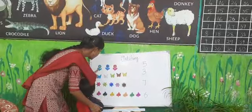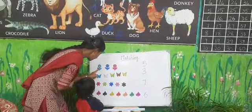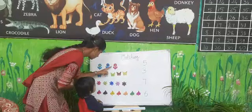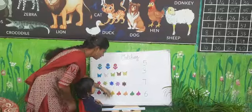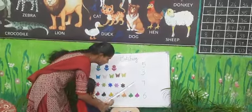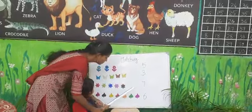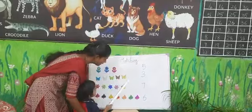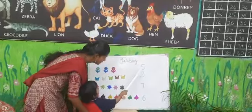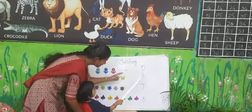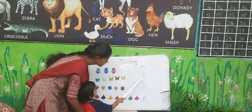How many flowers is there? Come, this one. Good. Where is the tree number? Show me the tree number. Show me the tree number inside. Three. Where is the tree number? Good.